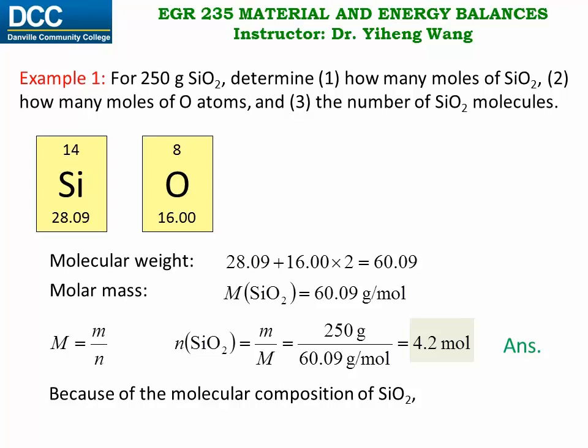And from the composition of the silicon dioxide molecule, for each silicon dioxide molecule there are two oxygen atoms, therefore the number of moles of oxygen atoms is 8.4 mole.